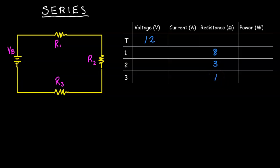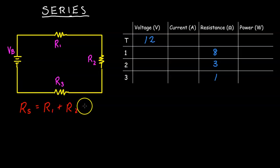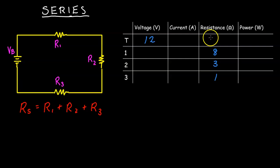The first thing we're going to do is figure out the total resistance, or equivalent resistance. The equation for finding it is R_eq (or R_S for series) equals the sum of all resistors: R1 plus R2 plus R3. If we add 8 plus 3 plus 1, we get 12 ohms.